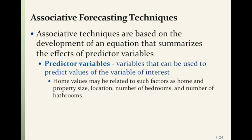Associative forecasting techniques use predictor variables that can be used to predict values of the variable of interest. For example, home values may be related to factors such as home and property size, location, number of bedrooms, and number of bathrooms. These are all predictor variables that you put into your formula to help predict the outcome.